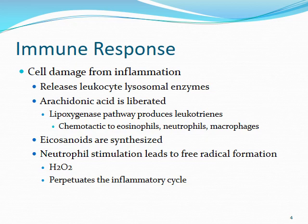Eicosanoids are also synthesized during this process. With neutrophil stimulation, free radicals like reactive oxygen species — things like H2O2 — are formed. These can damage cellular proteins, cause deformation, damage DNA, and induce apoptosis. This process of free radicals propagating further inflammation creates a perpetual cycle, which is where chronic inflammation really steps in.